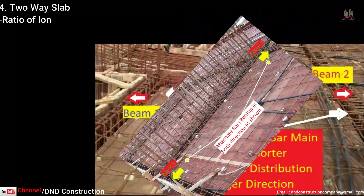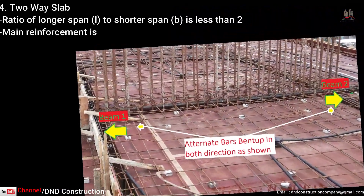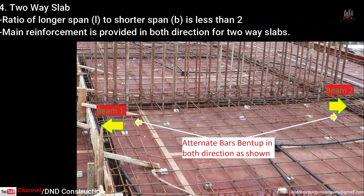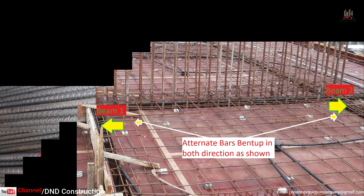The fourth point is two-way slab. When the ratio of longer span to shorter span is less than 2, it is a two-way slab. In a two-way slab, the main load is carried in both directions, and the main reinforcement bars are provided in both directions.